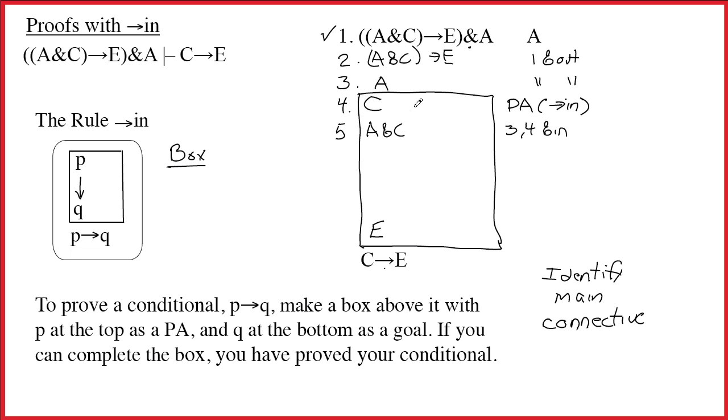And now that I've done that, I can do the arrow out and get E. Ah, but E was my new goal. So I'm just going to call this line 6, and it will be 2, 5, arrow out, and I'm done.